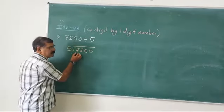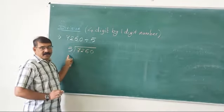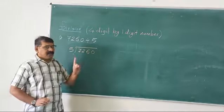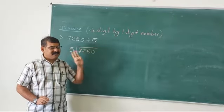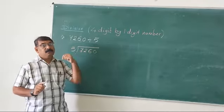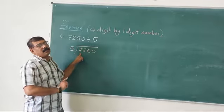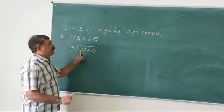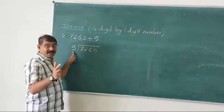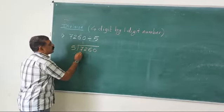Let us take the first digit. Now 7 is actually greater than 5, so we will divide the first digit only. We know the table of 5. We cannot subtract a greater number from a smaller number, so we take the smaller number that comes in the table of 5. 5 ones are 5, 5 twos are 10 — 10 will be bigger, so we go with 5 ones are 5. I will write 1 here.